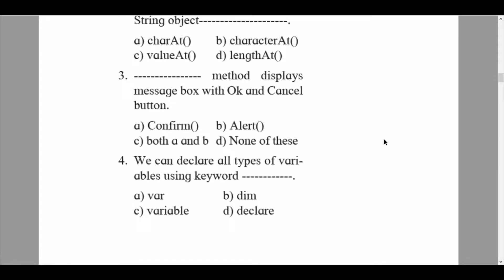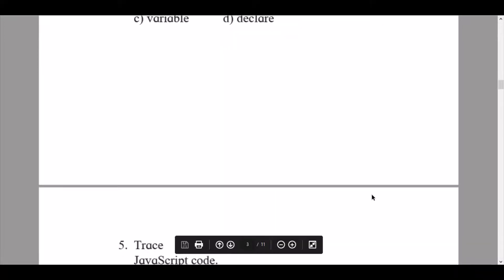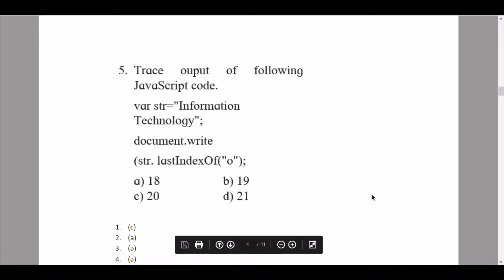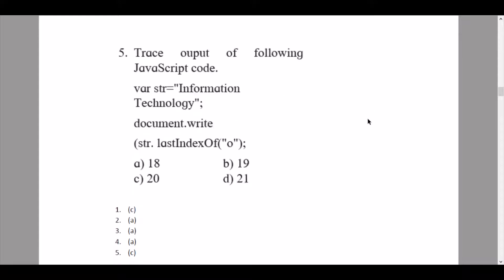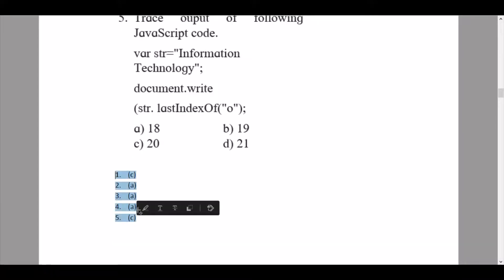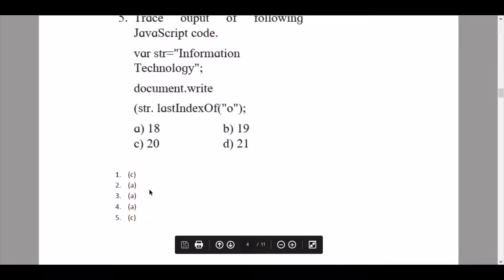Question 5: trace the output of the following JavaScript — var str equals to information technology, document.write str.lastIndexOf('o'). The answer is option C, that is 20. Please solve this yourself first before viewing the answer, otherwise it would just be copying.